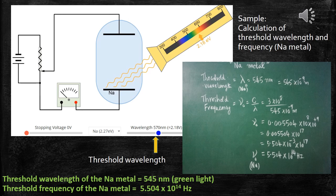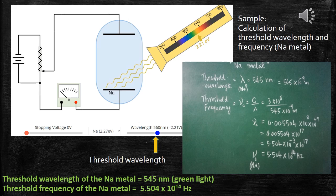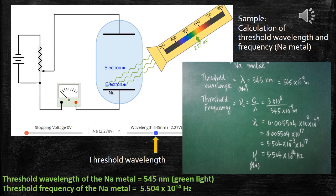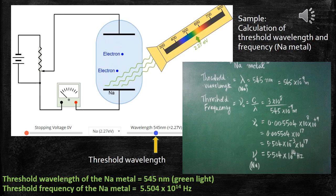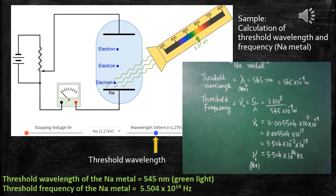With the help of kinetic energy, the photoelectrons are trying to move towards the anode. Exactly at the threshold frequency, or at the threshold wavelength, no electron will have kinetic energy. The electron will be ejected out, but the kinetic energy of the emitted electron will be zero. So exactly at threshold frequency, the kinetic energy of the photoelectron is zero.